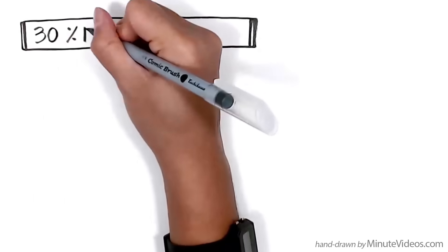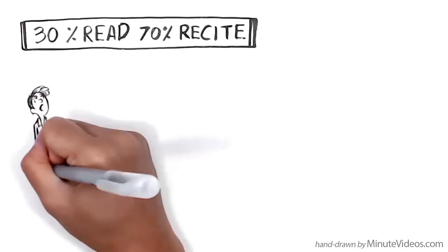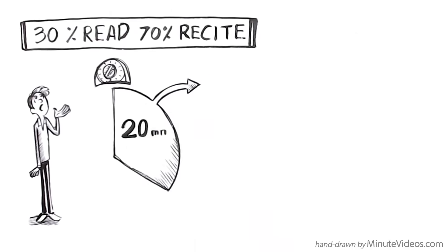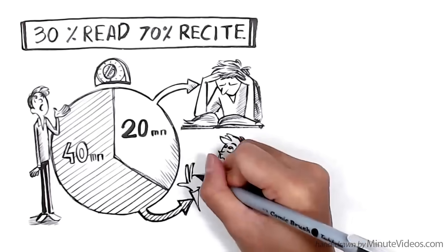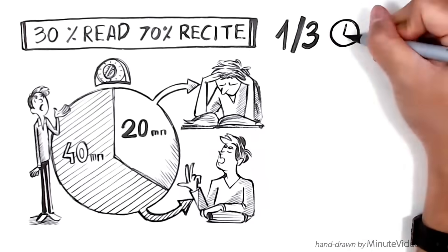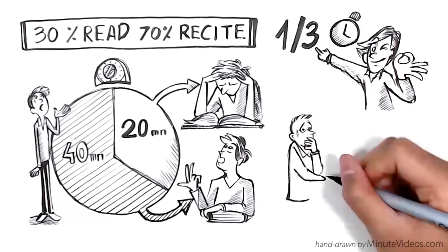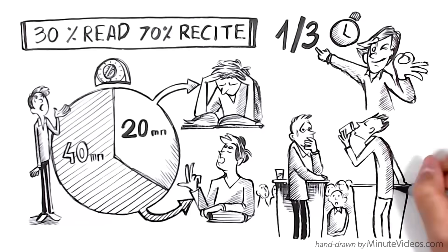30% read, 70% recite. If you have one hour to learn to recite a poem or prepare for a speech, spend 20 minutes of the time on studying the text and 40 minutes on practicing to recite. This ratio usually leads to the best results. In the case of an emergency, put a glass of water next to you. Take a sip whenever you lose it.